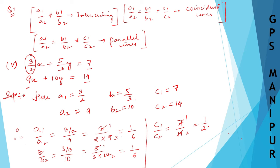So since we can see A1/A2 is equal to B1/B2, both these are equal, but not equal to the third one. So if A1/A2 equals B1/B2 but not equal to C1/C2, then it is parallel lines.